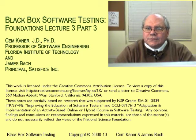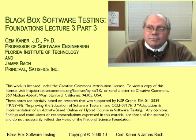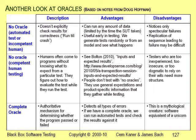Bach and Bolton's list of consistency heuristics is one structure that many people find useful. There's another structure that's been in the works for about 14 years — it comes from Doug Hoffman, who publishes ideas about how to compare and evaluate oracles in a set of tables.